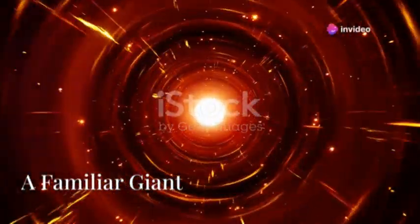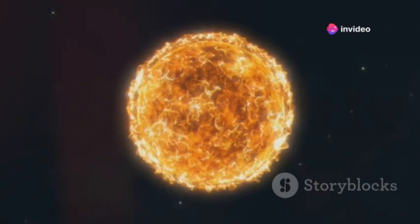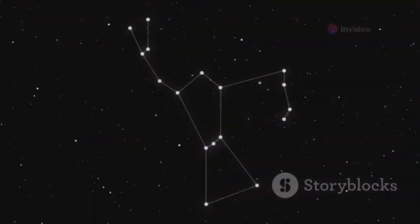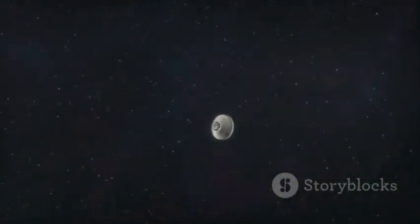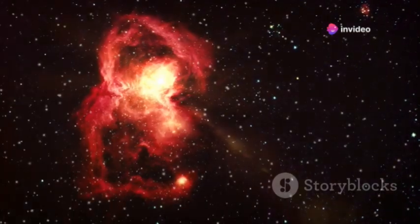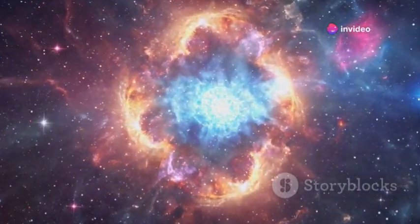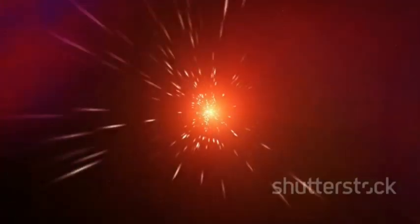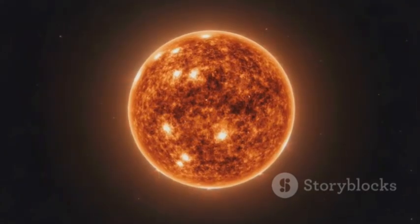Betelgeuse is a red supergiant star, much larger and more massive than our own sun. It's located in the constellation Orion, forming the hunter's right shoulder. You can easily spot it in the night sky as a bright reddish star. Red supergiants are stars nearing the end of their lives. They have exhausted the fuel in their cores and are now fusing heavier elements. This process causes them to swell up to enormous sizes, becoming unstable and prone to outbursts.